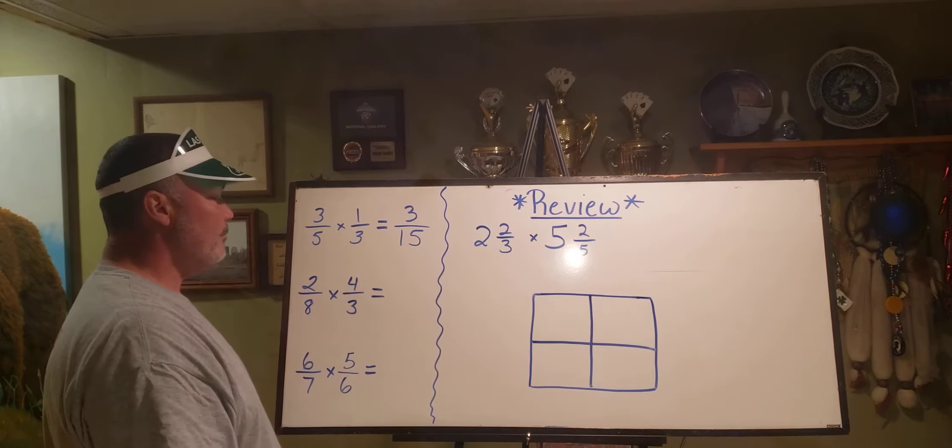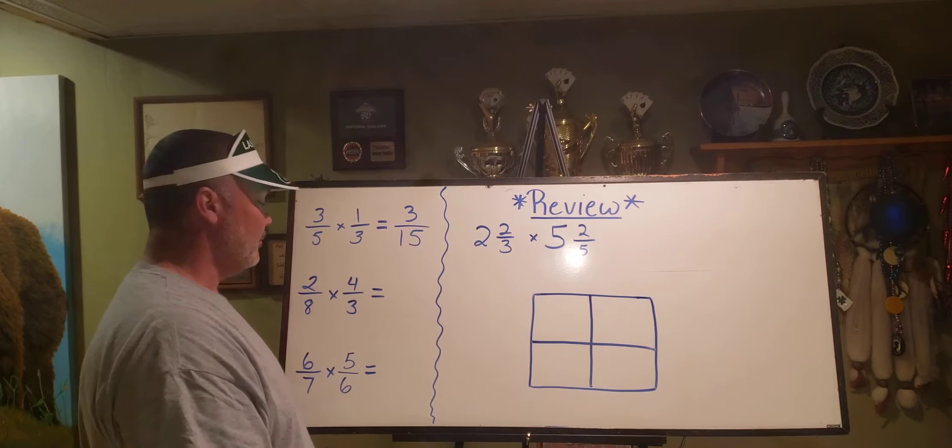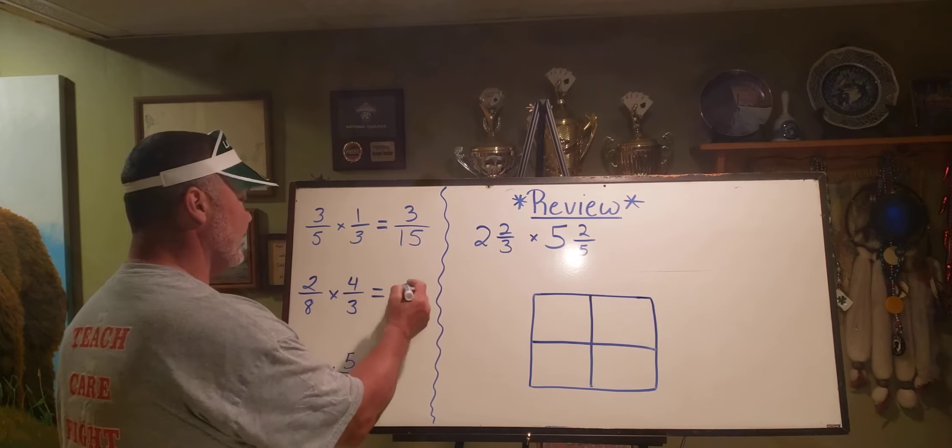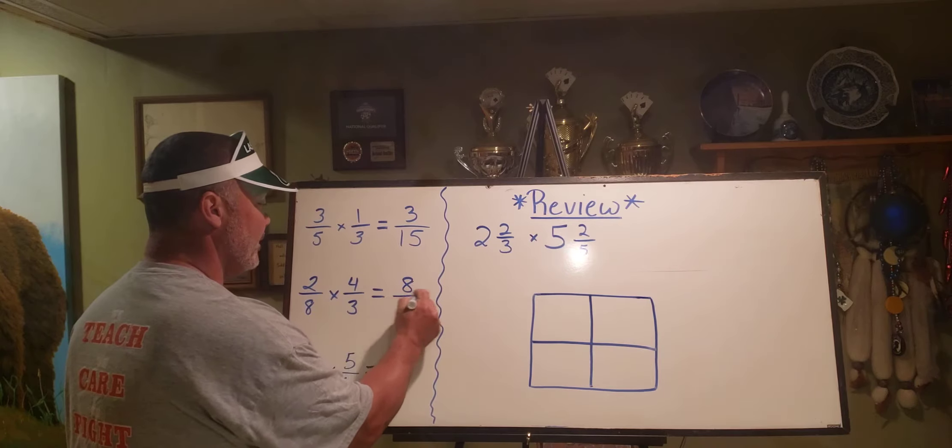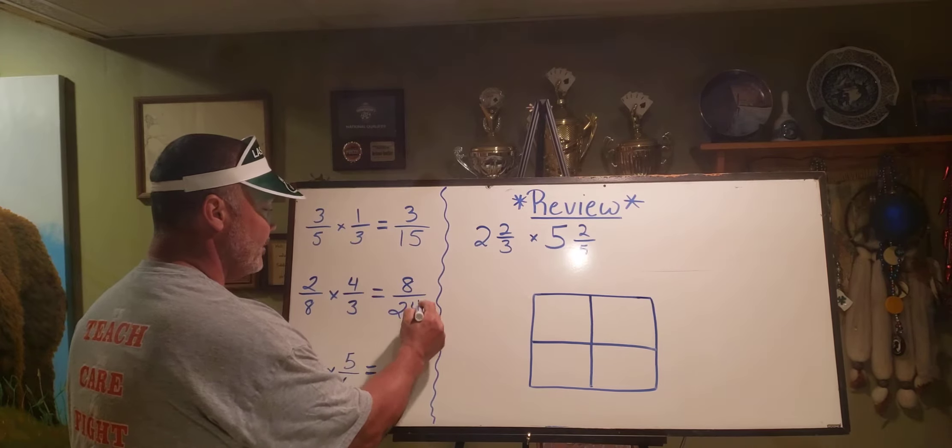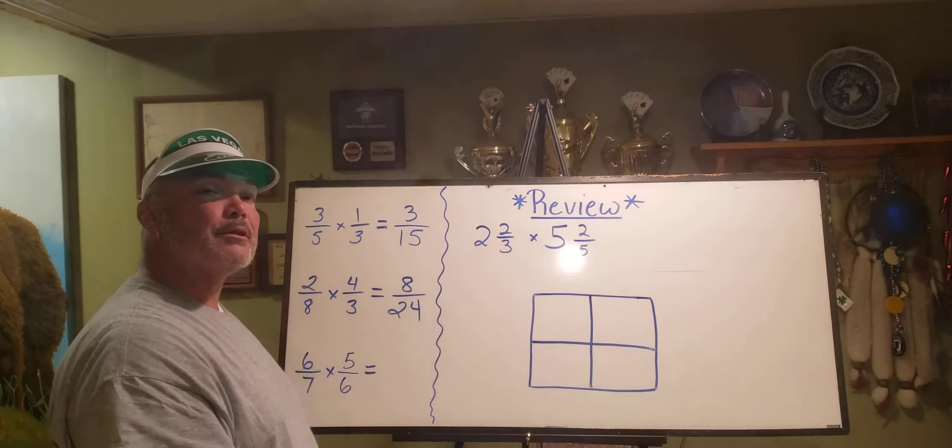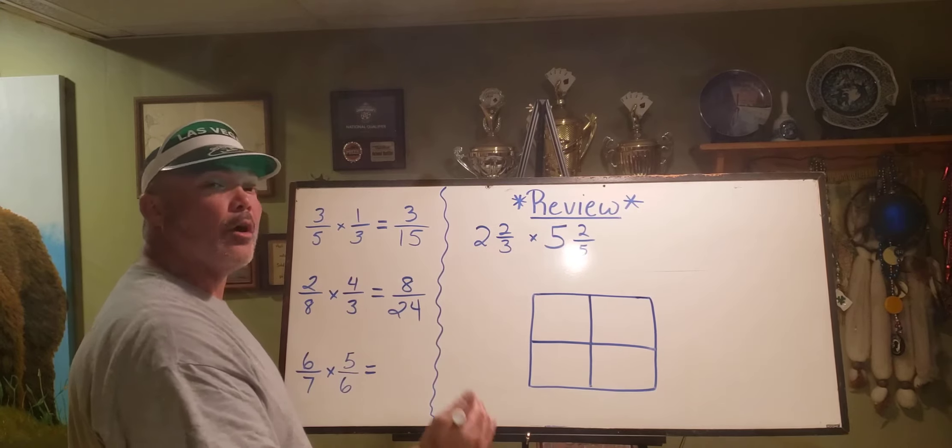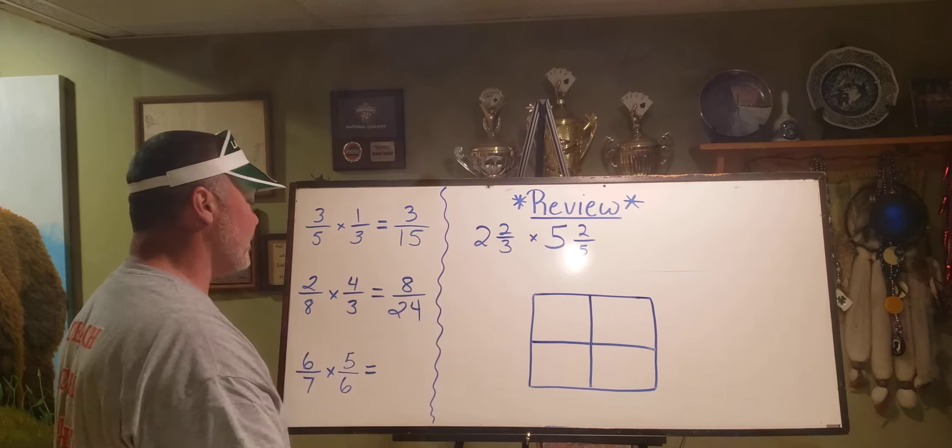Two divided by eight times four divided by three, or two eighths times four thirds. This is going to give us eight twenty-fourths. At any given time, you should be able to refer to your multiplication table, your multiples charts, or any of your tools in order to answer these questions.